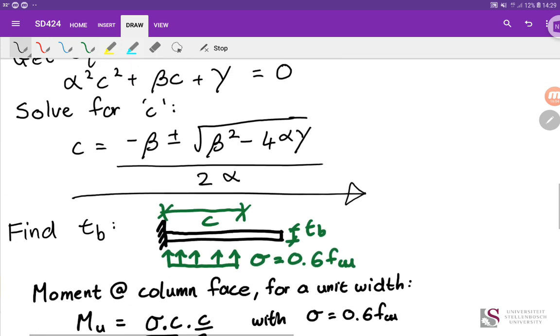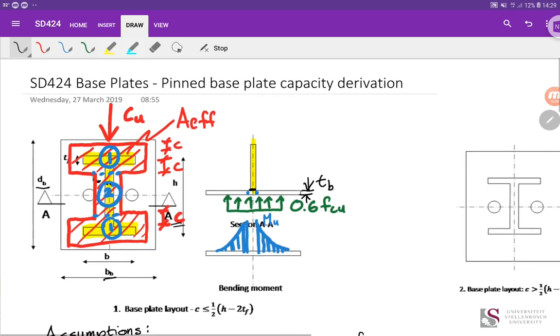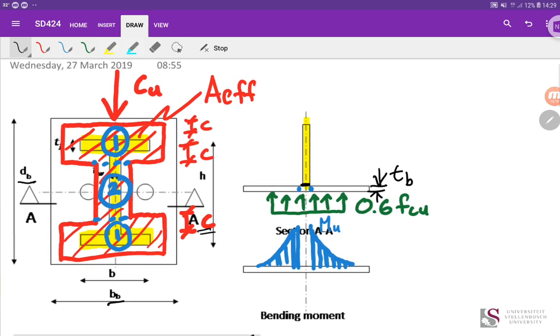So coming back, just as a summary of what we've just done, we took our base plate. We assumed a pattern. We let the load spread out a distance C. Then from C, we just solve for C to make sure that the effective area gives us the resistance that we need for Cu. Once we have found C, then we can determine what the thickness of base plate is. You can reverse engineer. For instance, if you know the thickness of base plate, then you can back up, calculate what the maximum value of C is.